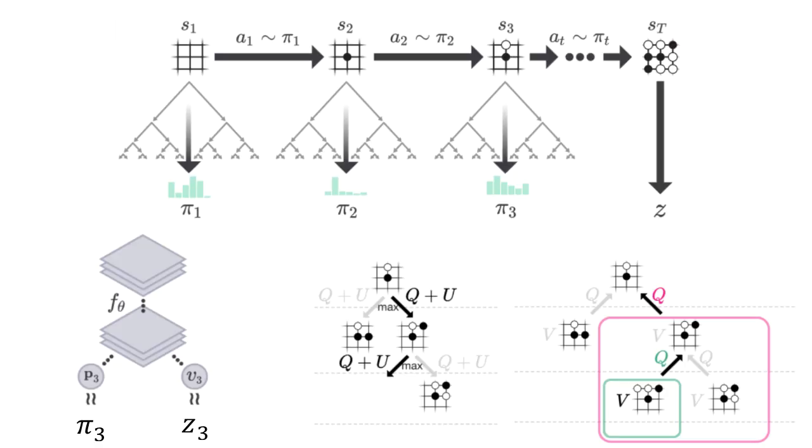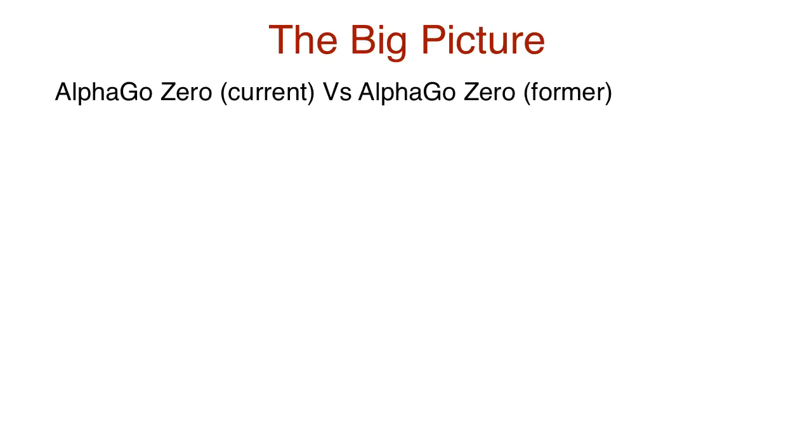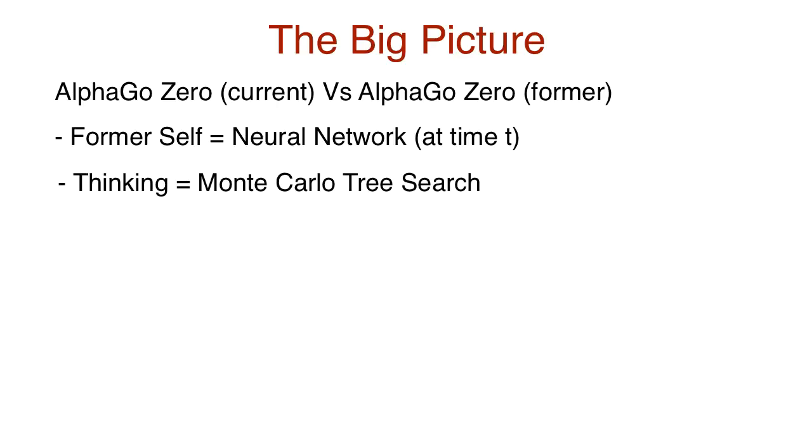This process goes on. I'm not sure if you already picked this up, but here's the analogy. The idea of self-learning involves AlphaGo Zero playing itself to constantly improve. Its former self is the neural network. This helps MCTS generate a better policy and allows the neural network to improve.